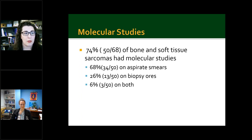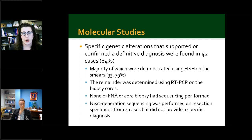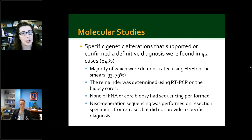Moving on to molecular studies: after excluding osteosarcoma, 74% of bone and soft tissue sarcomas had molecular studies performed either on aspirate smears or biopsy cores. 68% were performed on smears, 26% on cores, and 6% on cell blocks. Specific genetic alterations supporting or confirming definitive diagnoses were found in 42 cases (84%), with the majority demonstrated using FISH on smears. The remainder were determined using RT-PCR on biopsy cores. No FNA or core biopsies had sequencing performed; NGS was performed on resection specimens from core cases but did not provide a specific diagnosis in those occasions.